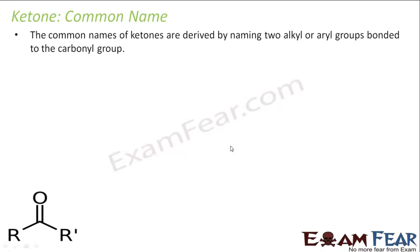First we'll learn the common names of ketones. The common names of ketones are derived by naming the two alkyl or aryl groups bonded. For example, if you see this ketone, I have two alkyl or aryl groups, R and R', so you have to name these two and then you get the name of the ketone.